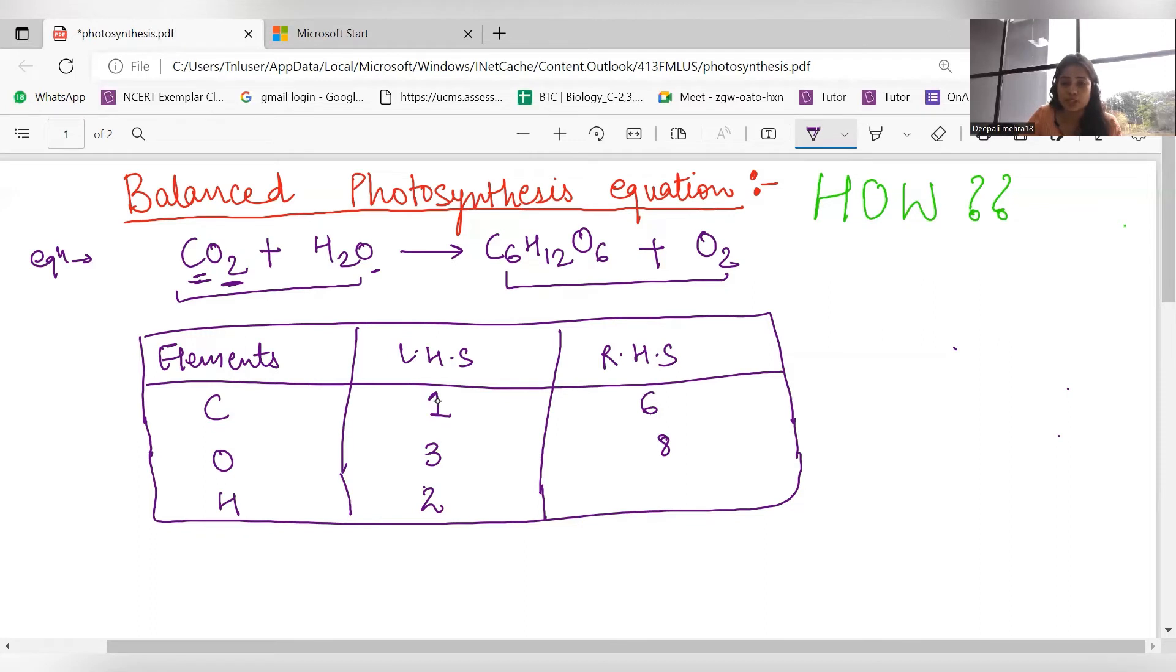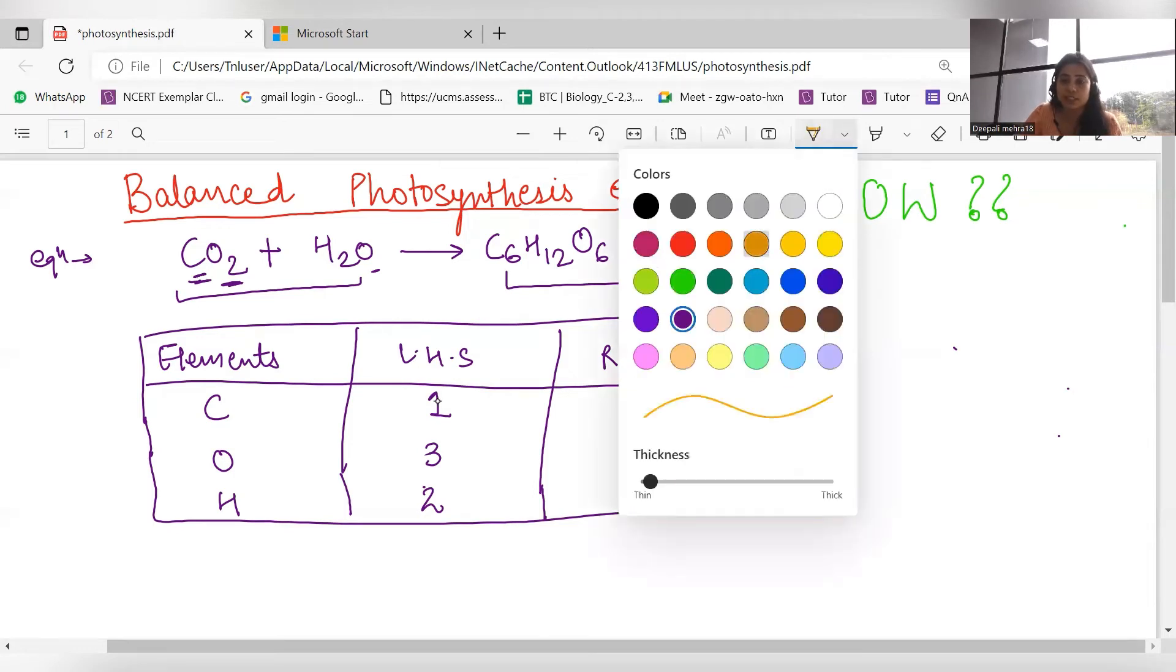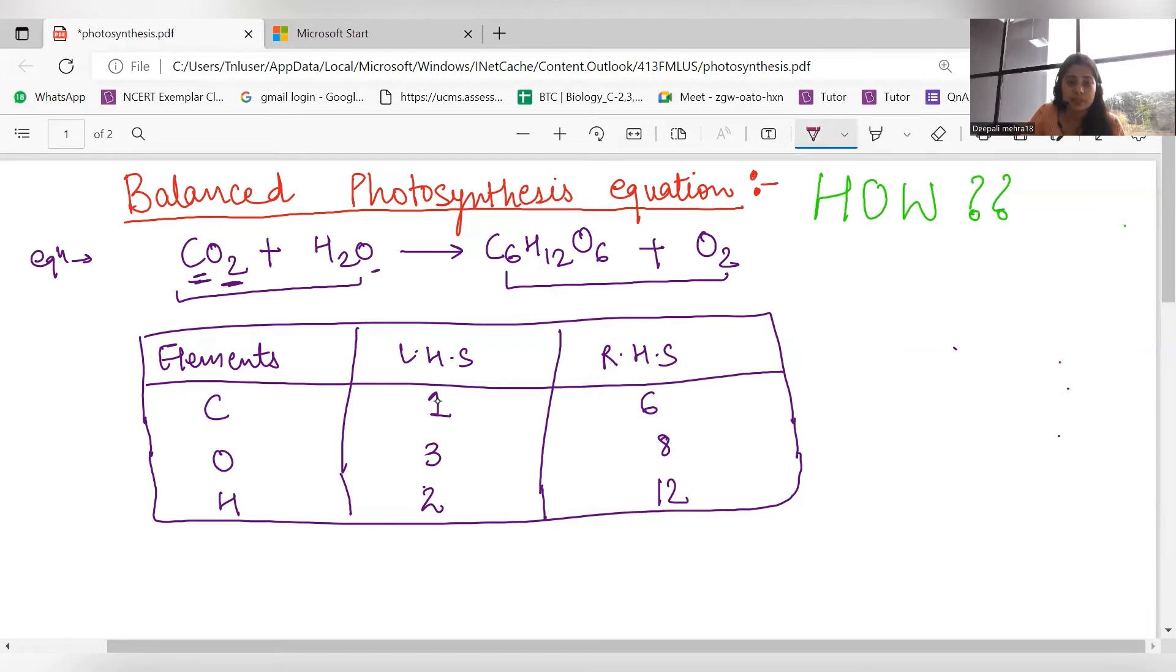Now we balance. Okay, it means here 6 carbon is on the left-hand side, we also have carbon 6 on the right. Let's use another color to balance this properly.